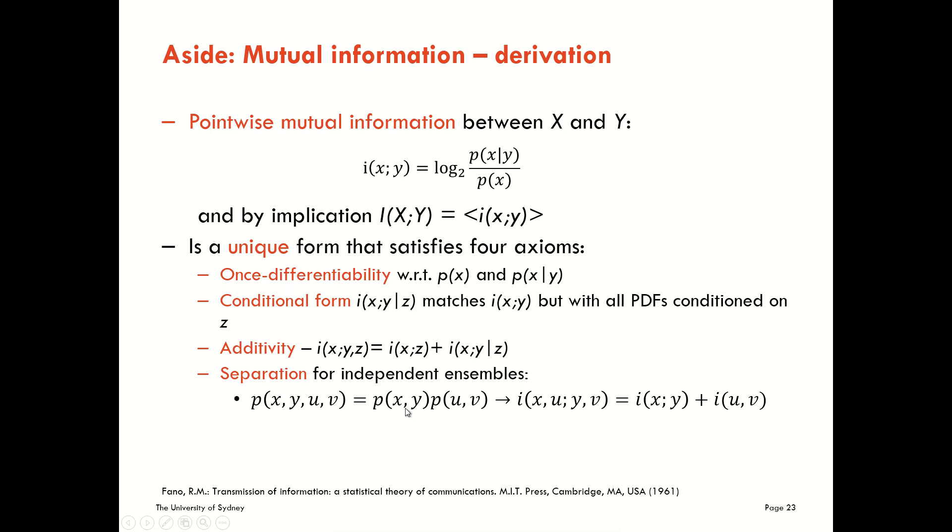So if we have X and Y being independent of U and V in the joint probability, then we can consider the information between X, Y and U, V as being a sum to get back to this mutual information term between two pairs of variables.